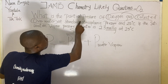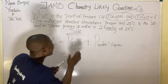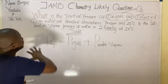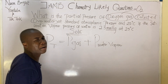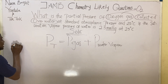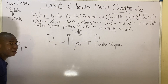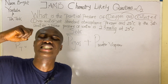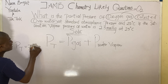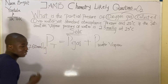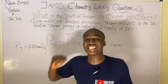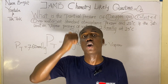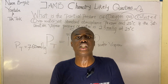The question asks for the partial pressure of oxygen gas, so we need to find P_gas. The question also says 'at standard atmospheric pressure' — this tells us our PT value. Standard atmospheric pressure is 760 mmHg, so PT = 760 mmHg.